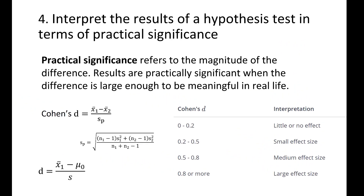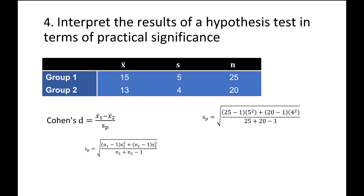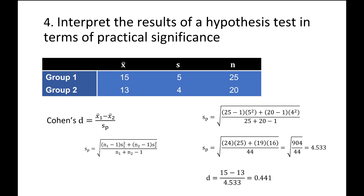Let's look at a quick example of computing Cohen's D. We have data from two groups with sample means, standard deviations, and sample sizes. We start by computing the pooled standard deviation by plugging in the values. Working through the algebra, we get a pooled standard deviation of 4.533. The pooled standard deviation should always be somewhere between the standard deviations of the two groups, since it's a weighted average. Then we solve for D as the difference in the two sample means divided by the pooled standard deviation. Cohen's D is 0.441, which is a small effect size, meaning the difference between the two groups' means is 0.441 standard deviation units. Whether this is practically significant depends on the scenario.